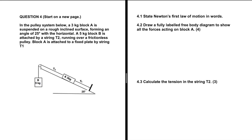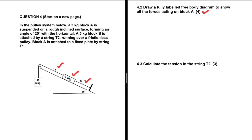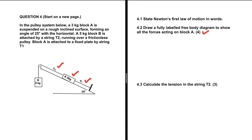In the pulley system below, a 3 kg block A is suspended on a rough inclined surface forming an angle of 25 degrees with the horizontal. A 5 kg block B is attached by string T2 running over a frictionless pulley. Block A is attached to a fixed plate by string T1. We are supposed to draw a fully labeled free body diagram for block A.